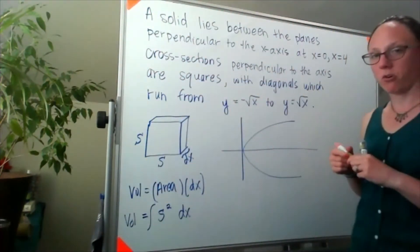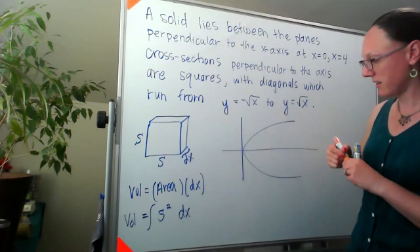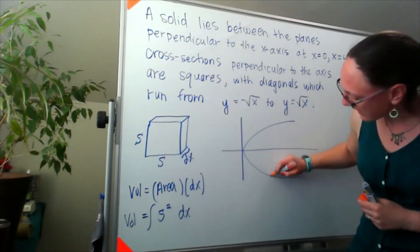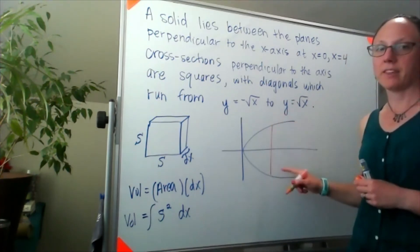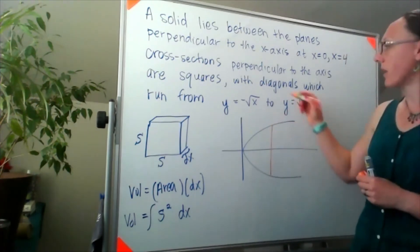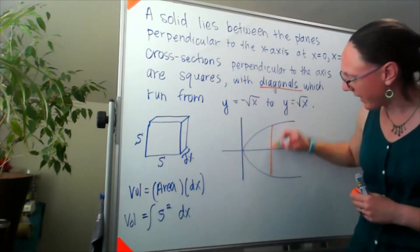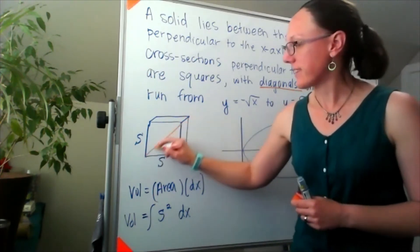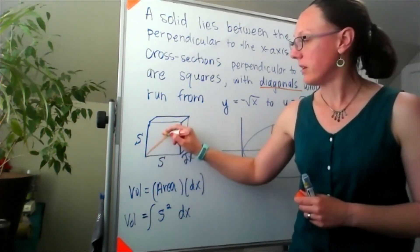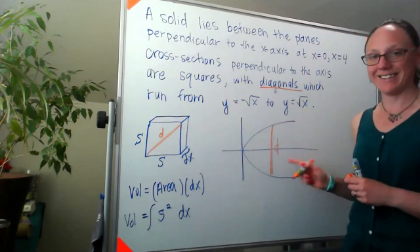We've been told that the cross-section is perpendicular to the x-axis. So I'm going to run this line perpendicular to the x-axis. This is the diagonal of that square. So this length right here corresponds to this diagonal over here, and I'll just call that d.